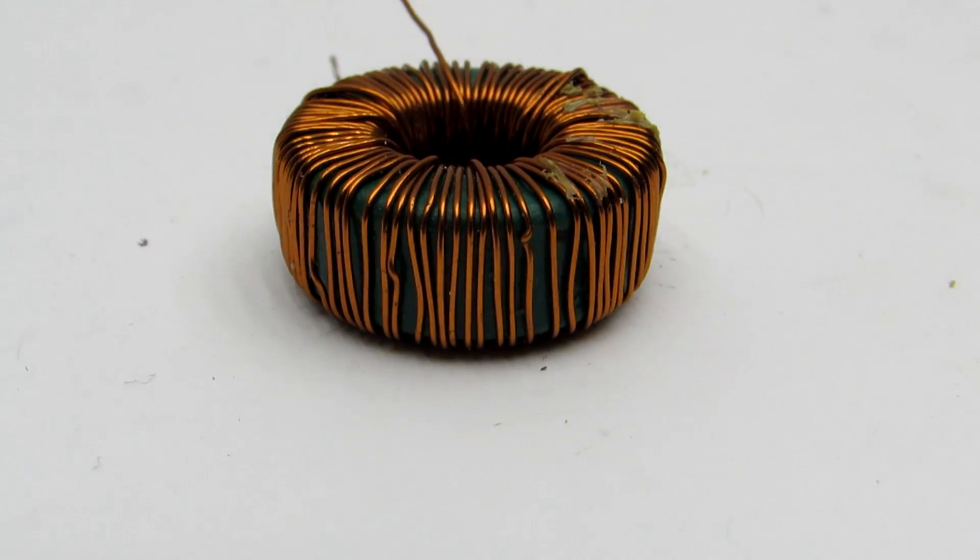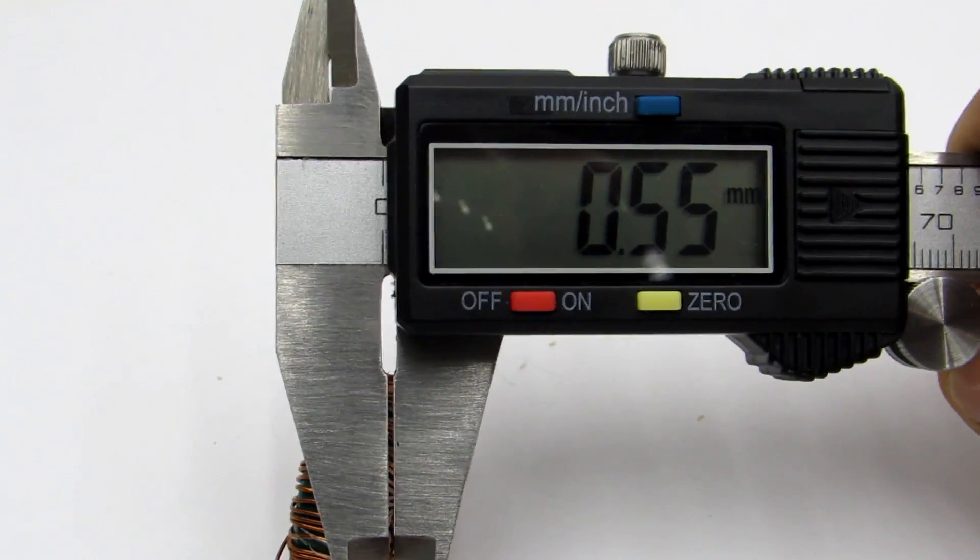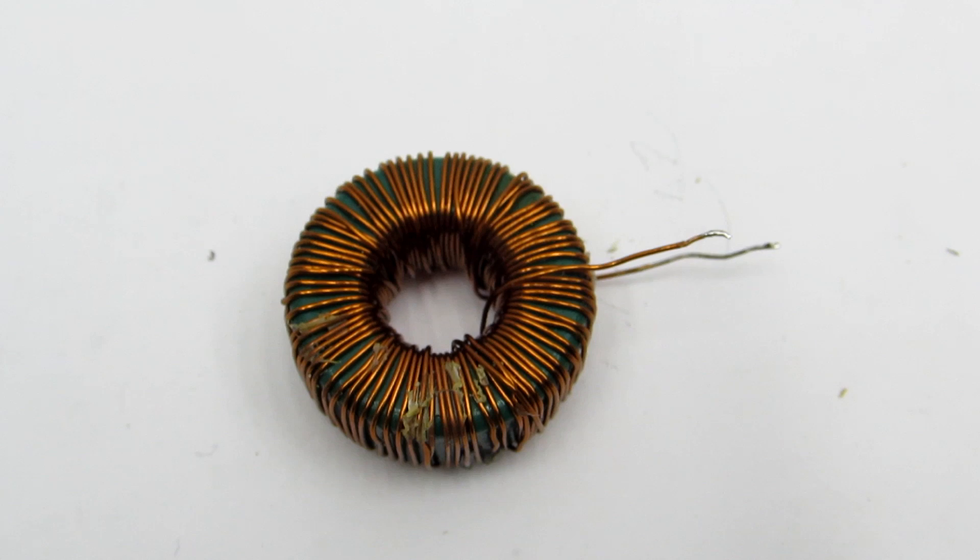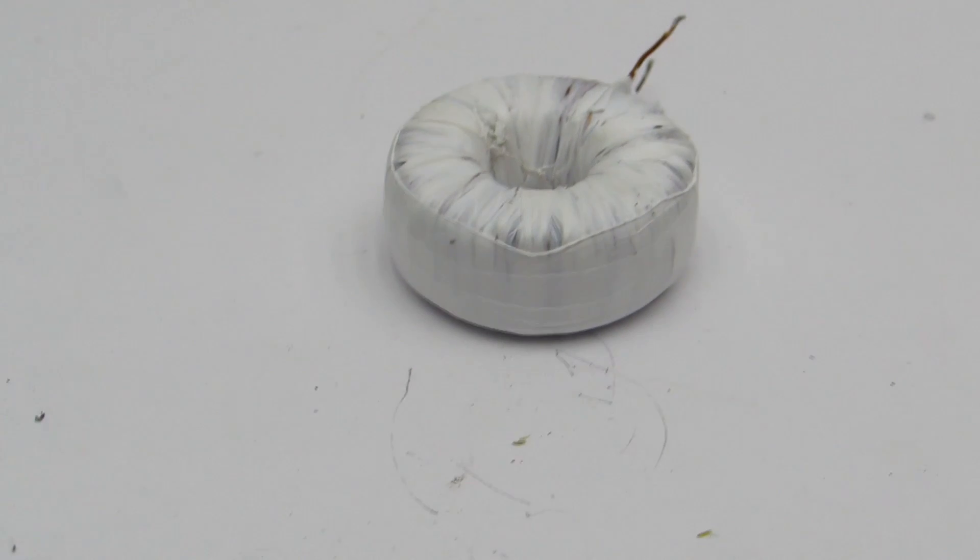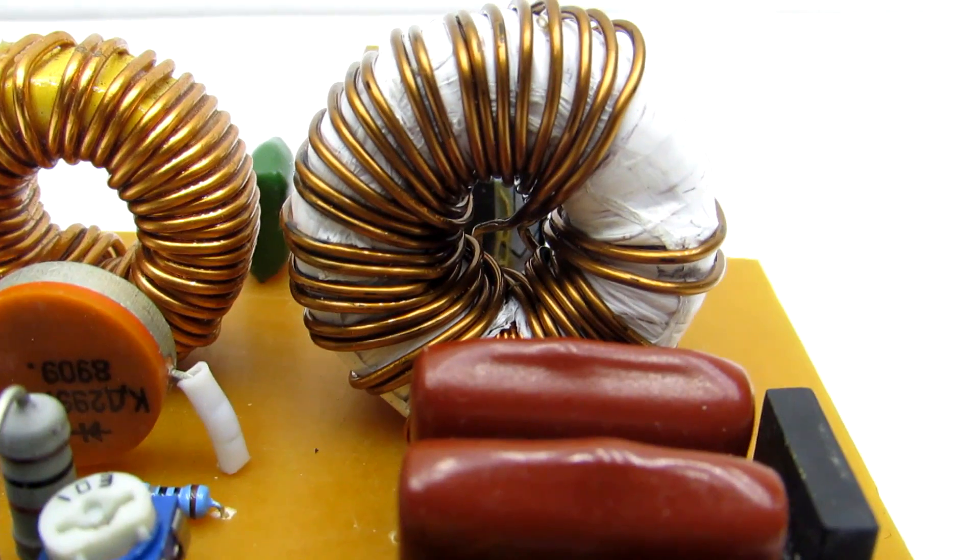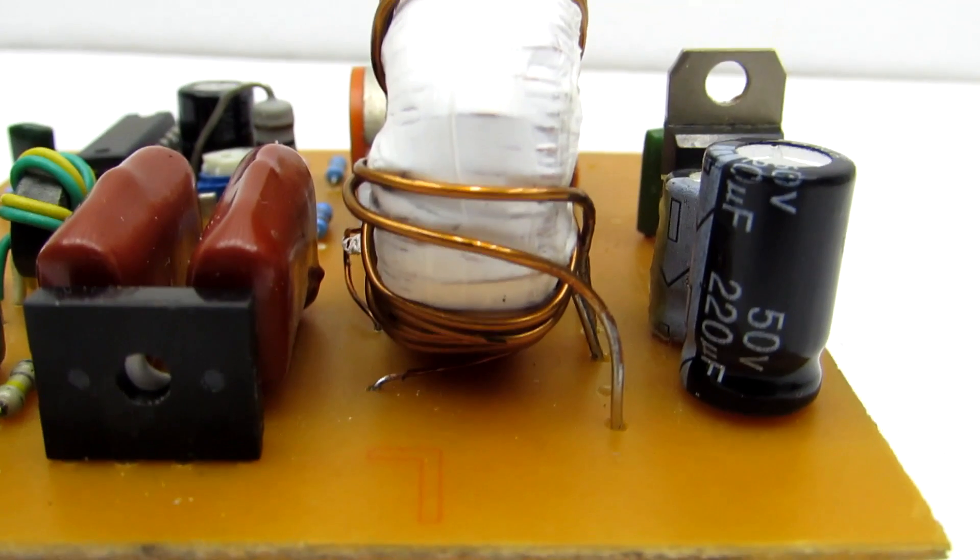The primary winding consists of 90 turns of 0.55 mm wire. Winding data are taken from the 150 watts electronic transformer. The winding is insulated with fluoroplastic tape. The secondary winding has a midpoint. Shoulders are identical. Wire diameter is 1 mm. The number of turns is 18.